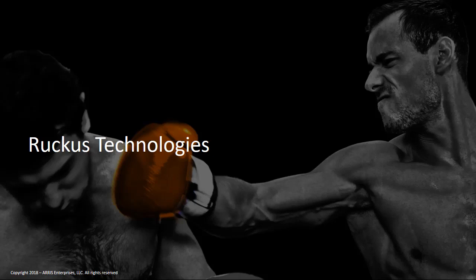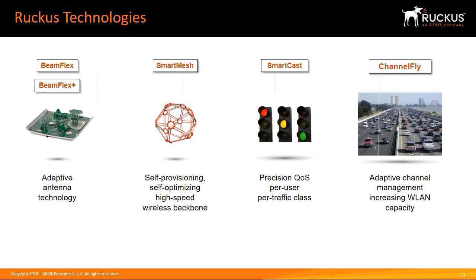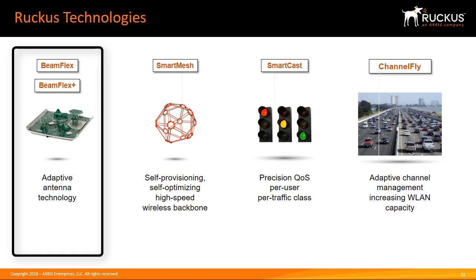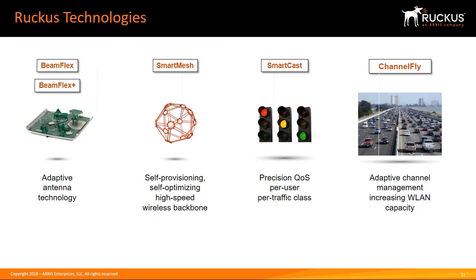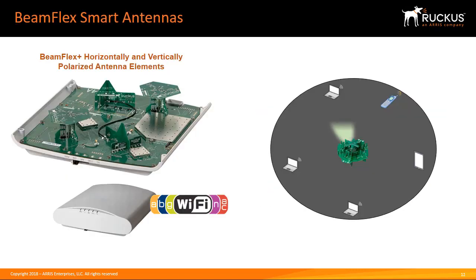Ruckus Wireless has a number of proprietary technologies that ensure wireless LANs are able to provide optimal performance under the most testing conditions. These are BeamFlex and BeamFlex Plus, SmartMesh, SmartCast, and ChannelFly. BeamFlex is a unique Ruckus technology and is without a doubt the main advantage of using a Ruckus wireless access point. The BeamFlex antenna array directs transmissions towards the client to maximize the efficiency of the transmission.